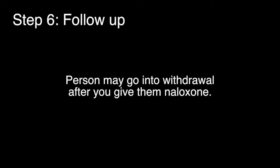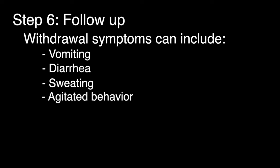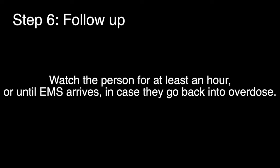Step 6: Follow up. If the person is dependent on heroin or other opiates, they may go into withdrawal after you give them naloxone. Withdrawal symptoms can include vomiting, diarrhea, sweating, and agitated behavior. This may be unpleasant and dramatic, but it is not life threatening and only lasts until the naloxone wears off. Tell them that naloxone wears off in 30 to 45 minutes and there are still drugs in their system. Within 90 minutes, the withdrawal effects will be gone. Watch the person for at least an hour or until emergency medical services arrive in case they go back into overdose.